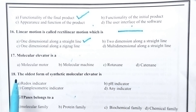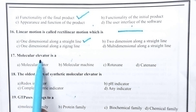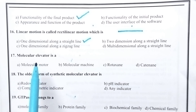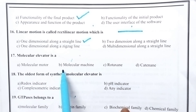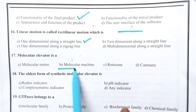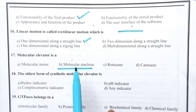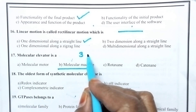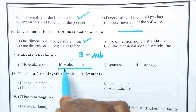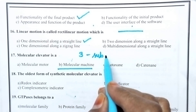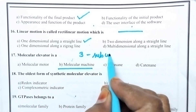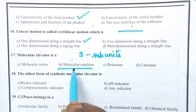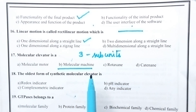Coming to the 17th question: molecular elevator is A. Simply, a molecular elevator can be called as a molecular machine consisting of three subunits. So a molecular elevator consists of a molecular machine with at least three subunits. Option B, that is molecular machine, is the right answer.